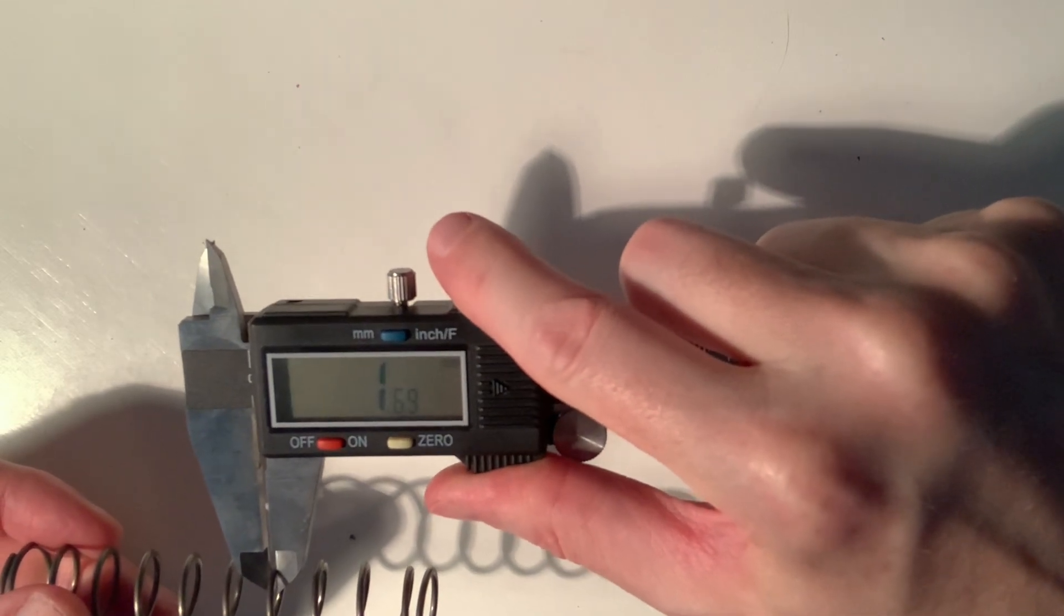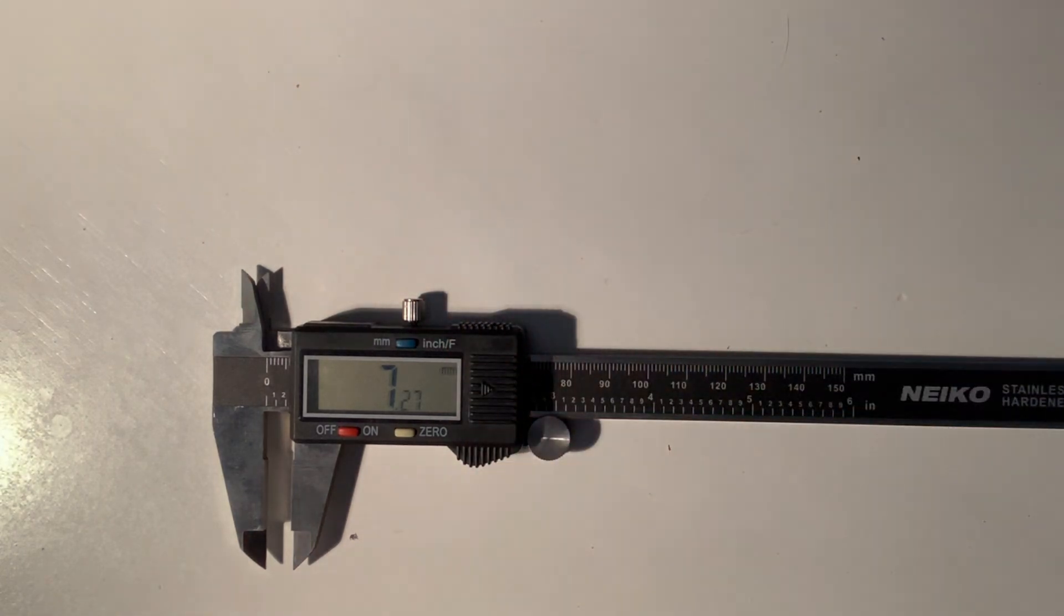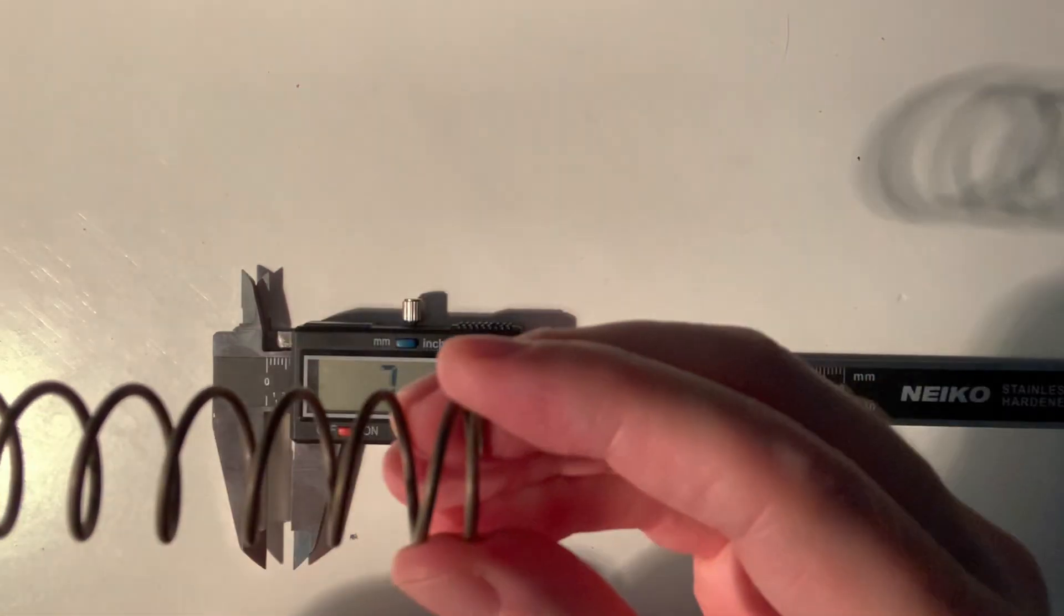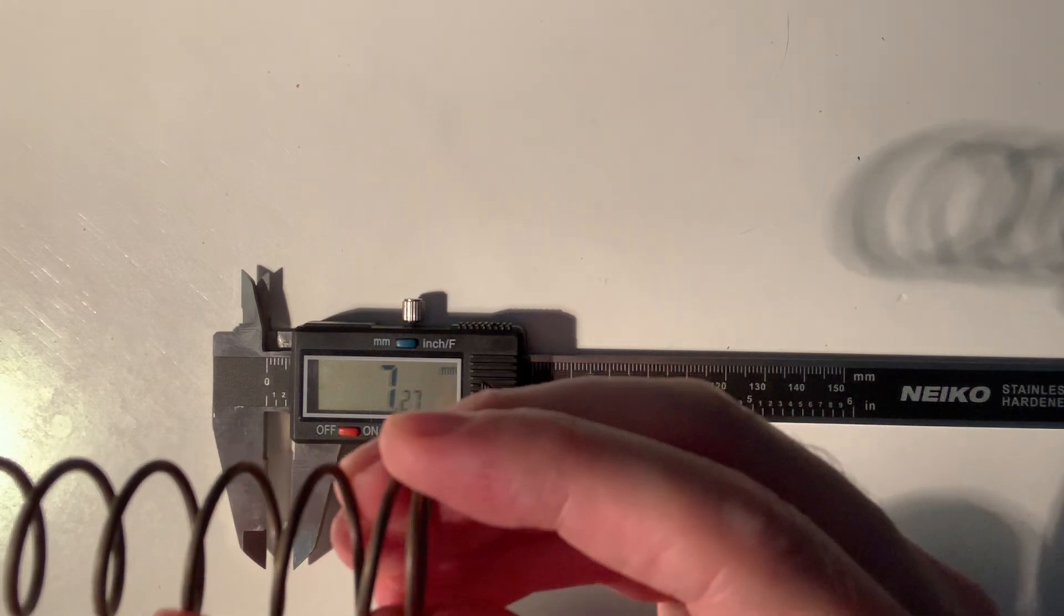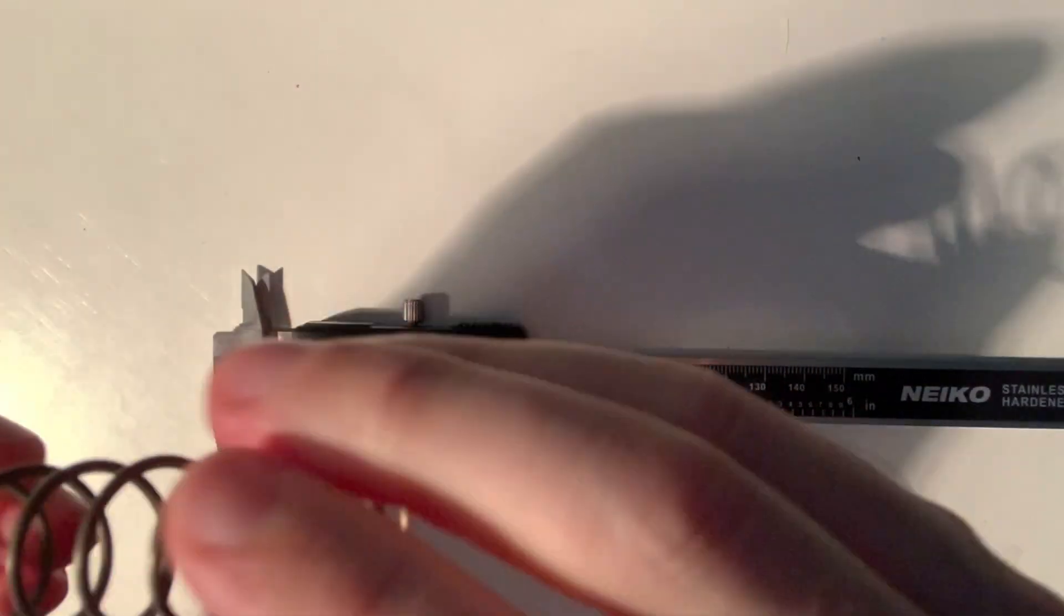Okay, now in comparison, let's try a VKS spring and see how it differs. The VKS spring, you can see, has less coils: one, two, three, four, five, six, seven, eight, maybe another half coil, eight to nine coils. It's definitely a stronger spring.